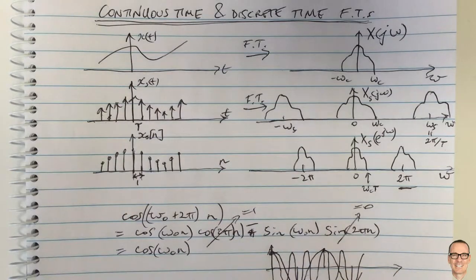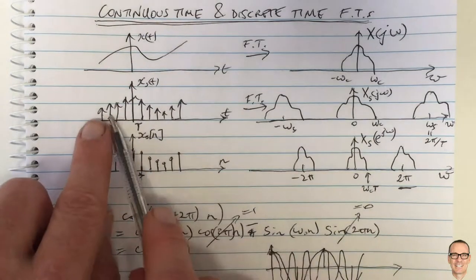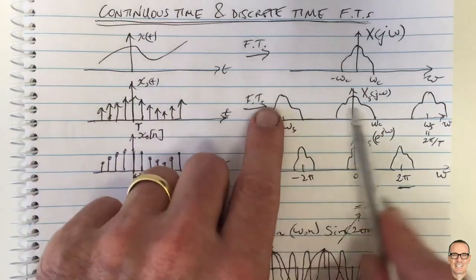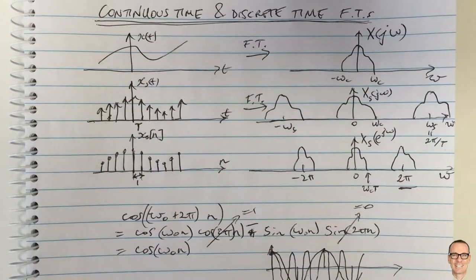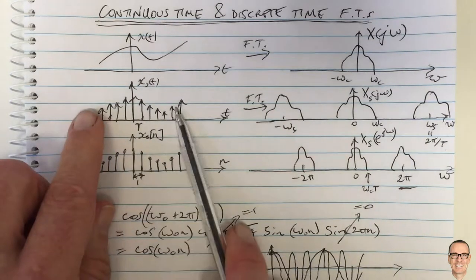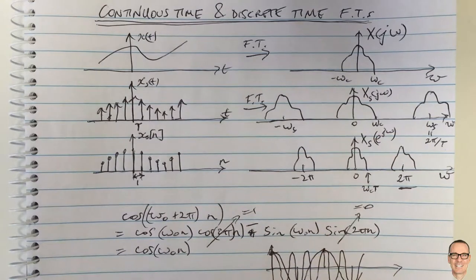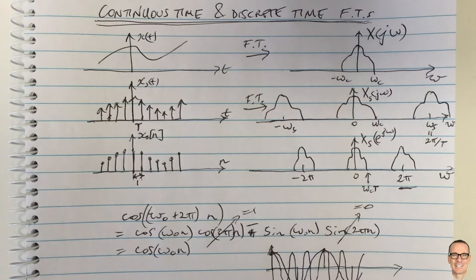If you're not sure about why this Fourier transform appears for the continuous time sampled waveform, there's a link to click on to see the Fourier transform of a sampled waveform in continuous time. Don't forget to subscribe and like this video, and check out the other videos on the channel.